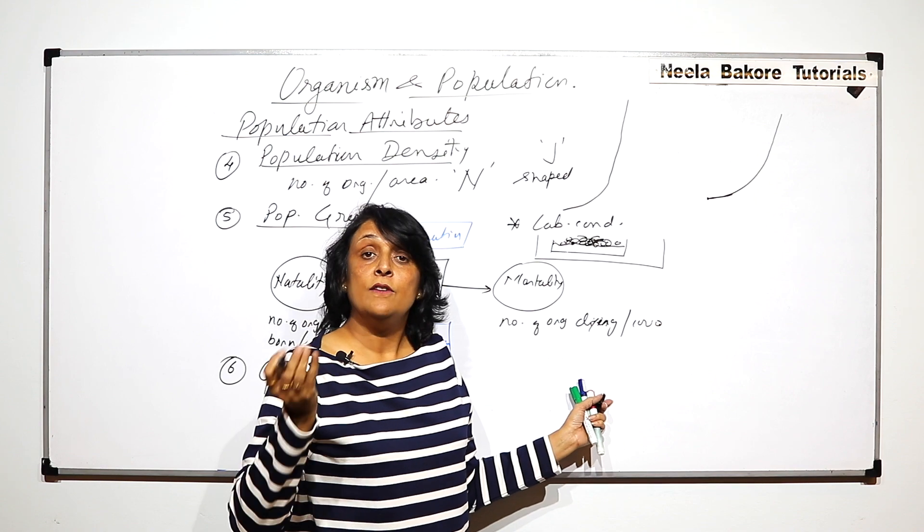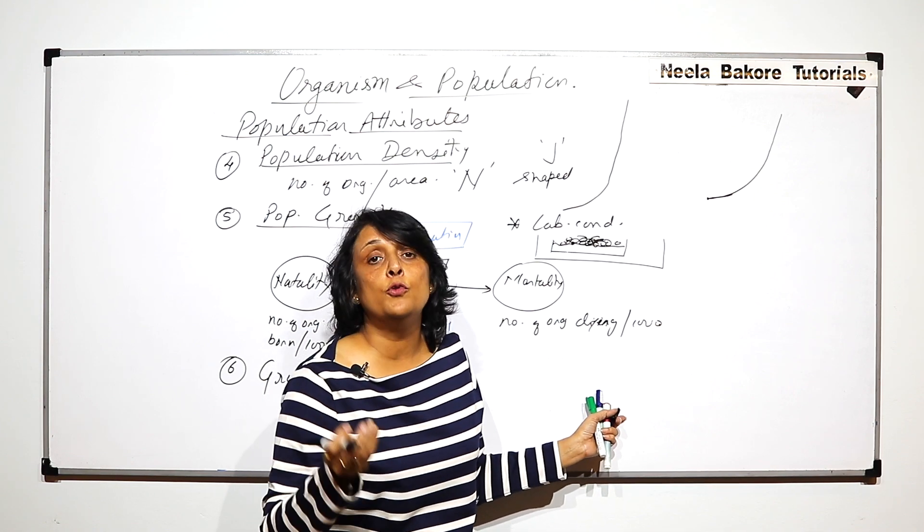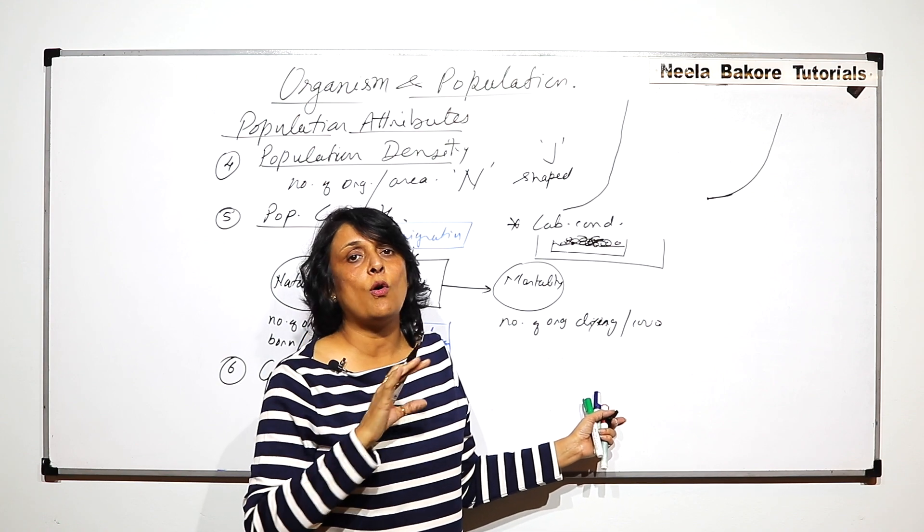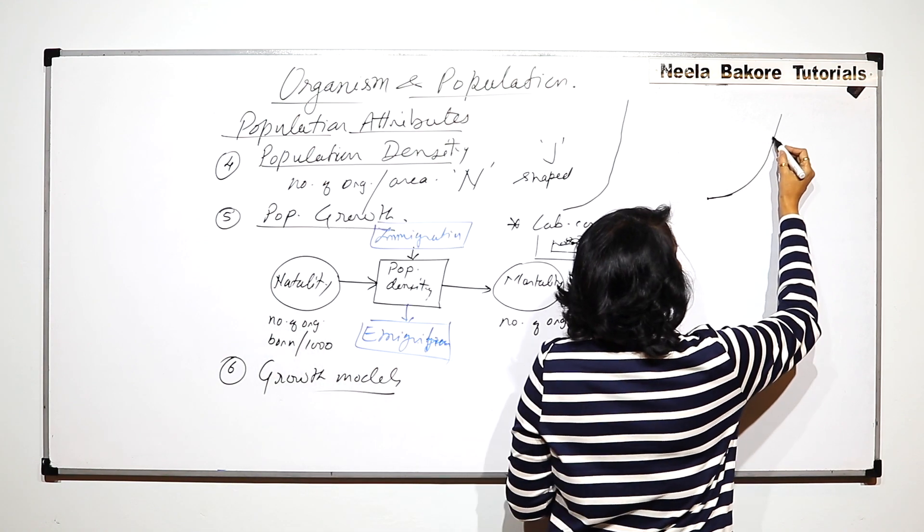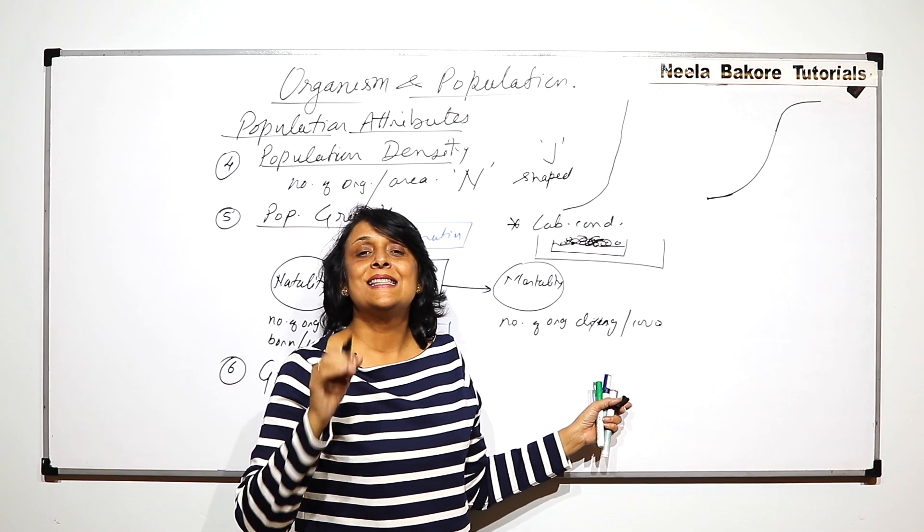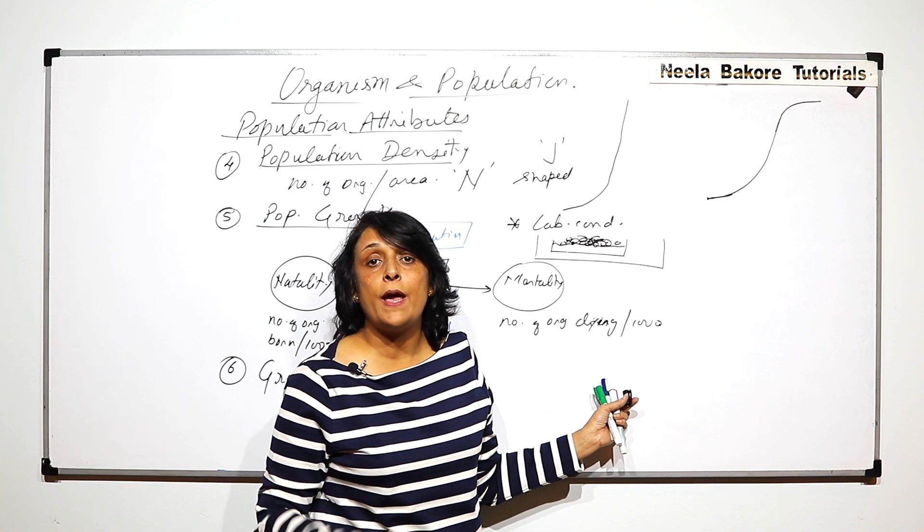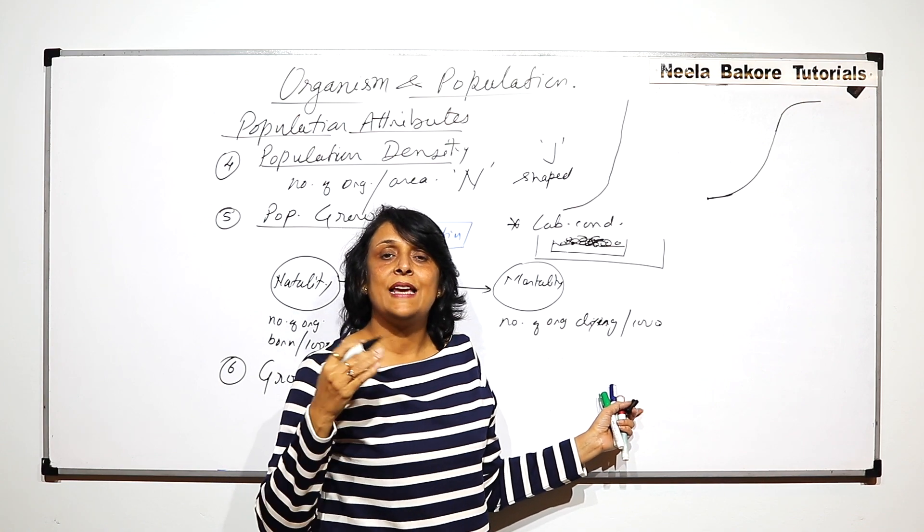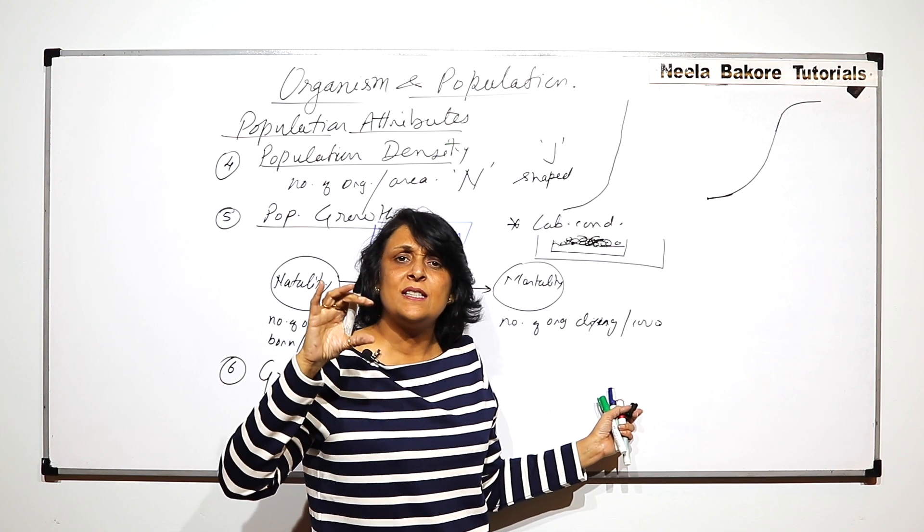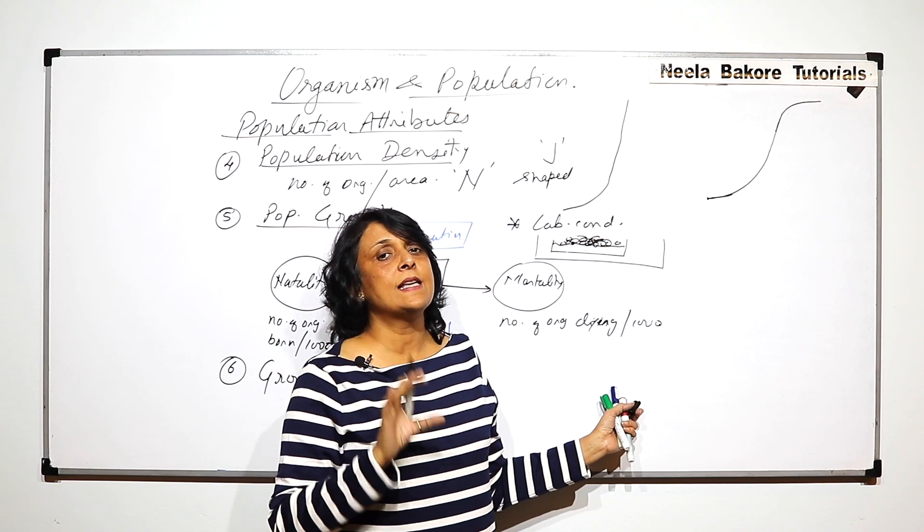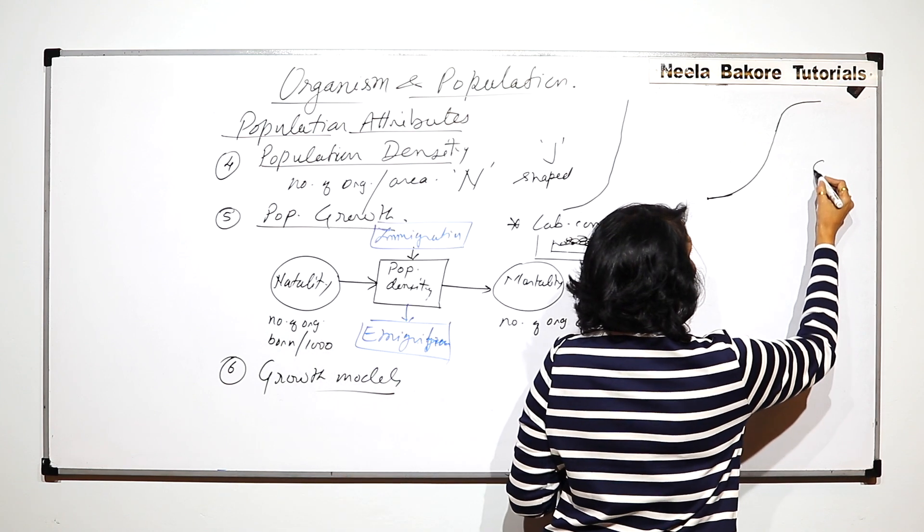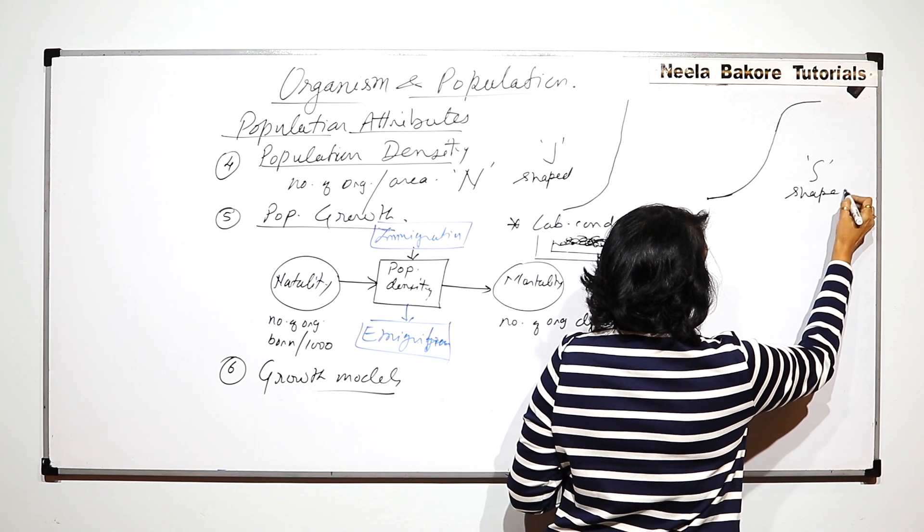But in nature, something is going to become a limiting factor. Either resources become limited, like food resource, or space may become limited. So something in nature will always become a limiting factor. And as something becomes limiting, the growth becomes steady. That means a stage would come where the number of individuals getting added into the population and getting eliminated from the population is pretty much same because there is something which is a limiting factor. So here we get an S-shaped growth curve.